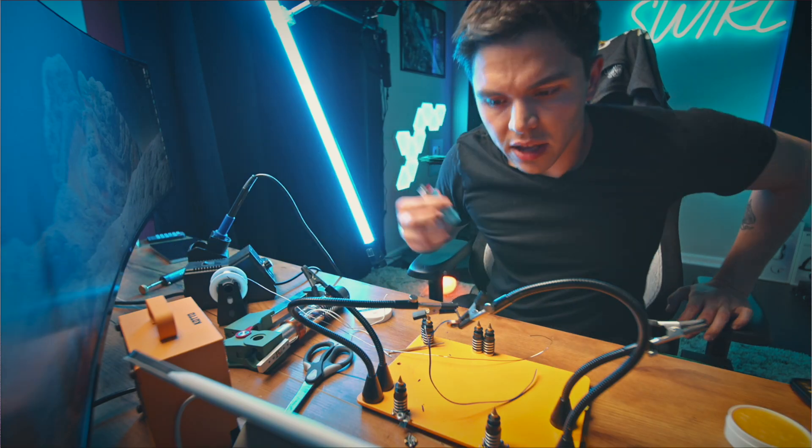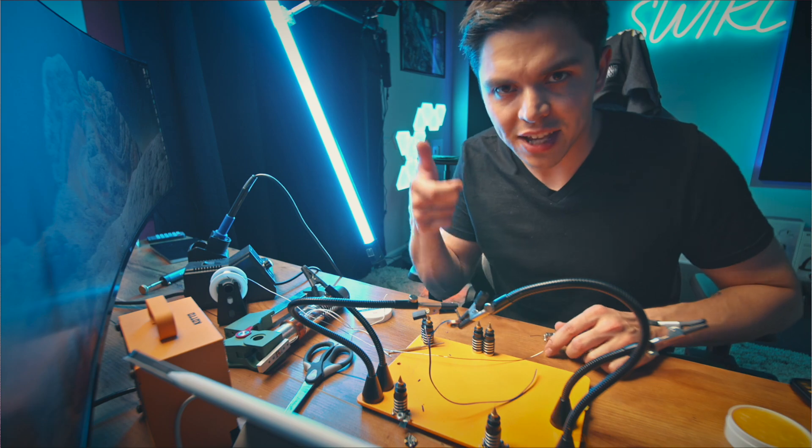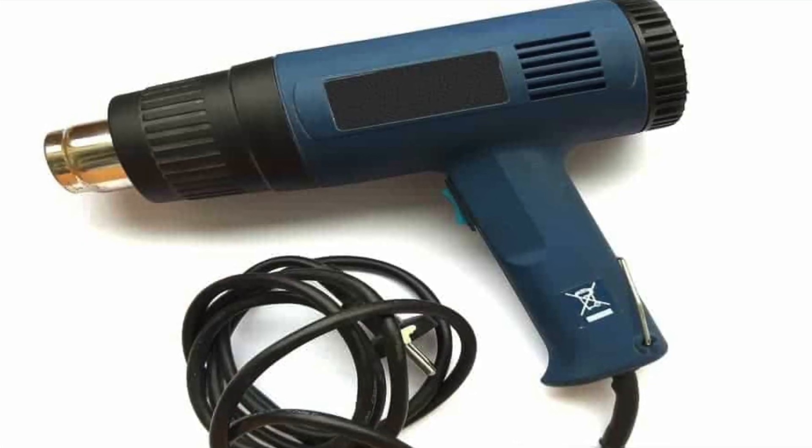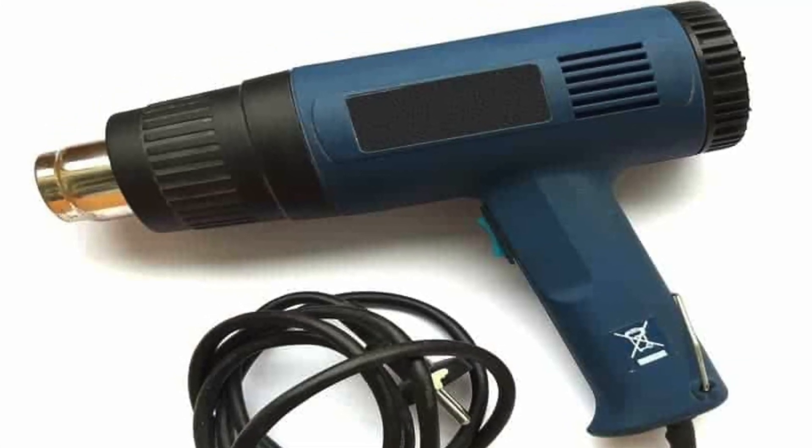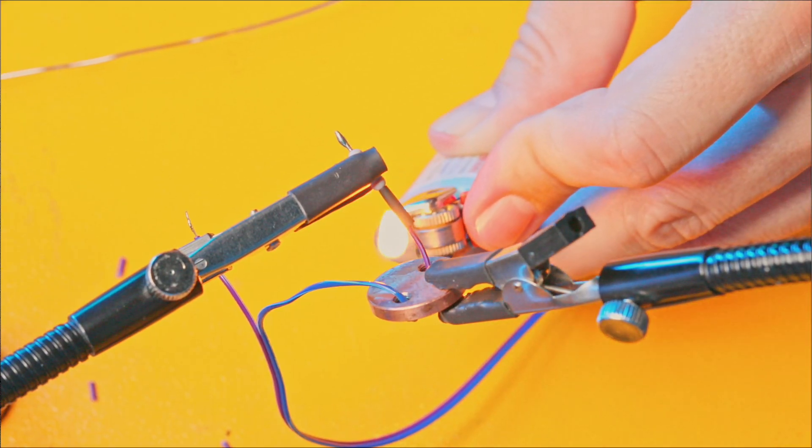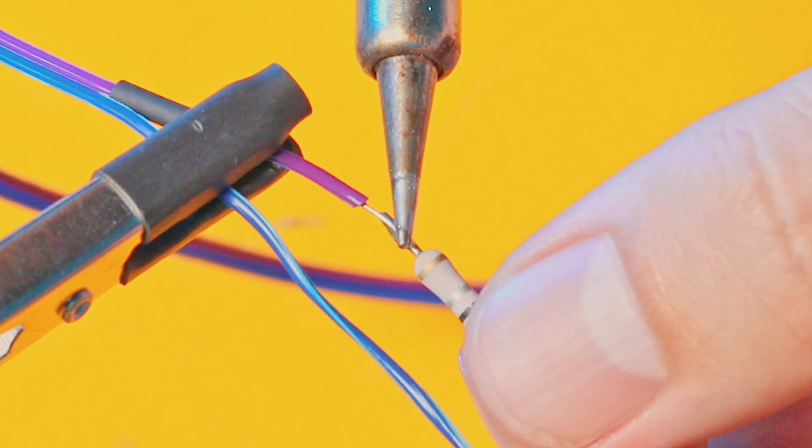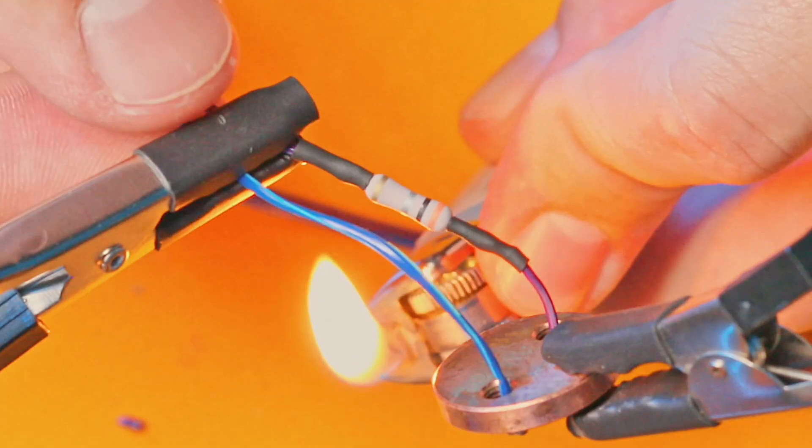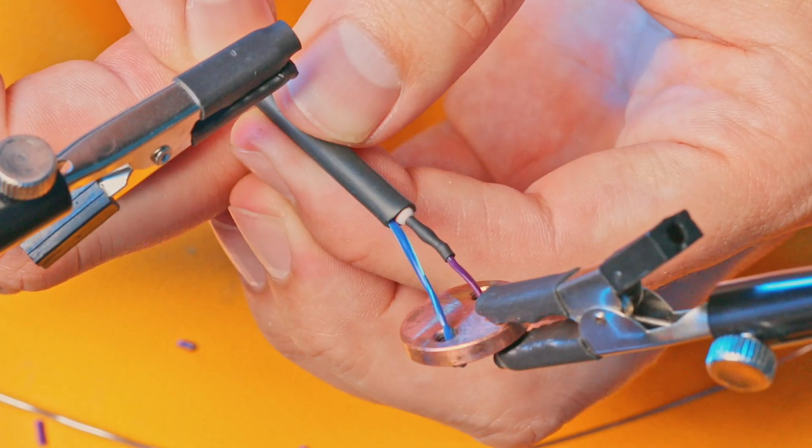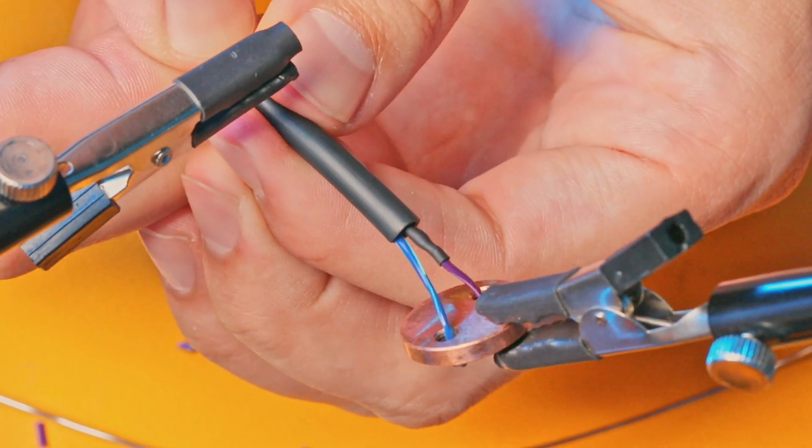You're not supposed to be using a lighter for this sort of thing. There's something called a heat gun, it looks like a blow dryer like for hair but it's much more concentrated. But I don't have one and improvising... there you have it. I wonder if it's big enough. Oh yeah.